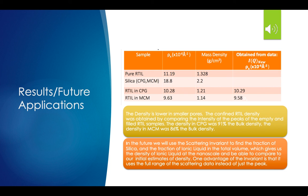Results and future applications. The density is lower in smaller pores. The confined RTIL density was obtained by comparing the intensity at the peaks of the empty and filled RTIL samples. We concluded that the density in CPG was 91% of the bulk density, and the density in MCM was 86% of the bulk density — where bulk density is the density of the RTIL not in confinement. With our findings in the future, we will use the scattering invariant to find the fraction of silica and the fraction of ionic liquid in the total volume. This gives the density of the ionic liquid at nanoscale and allows comparison to our initial estimates of density. One advantage of the invariant is that it uses the full range of scattering data instead of just the peak.